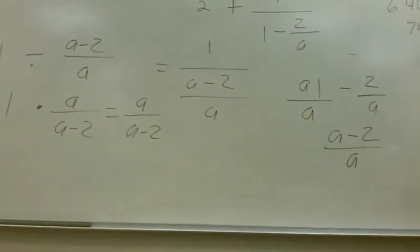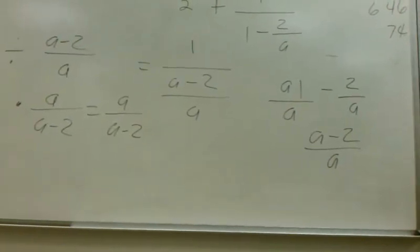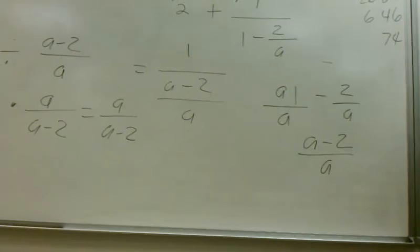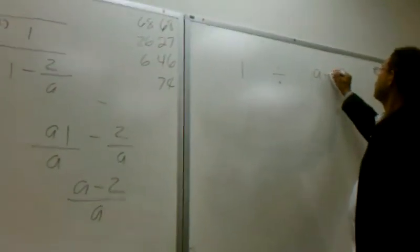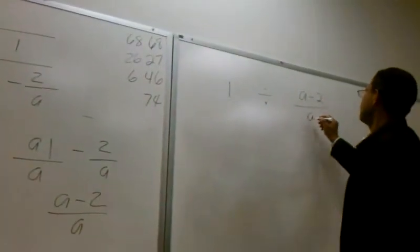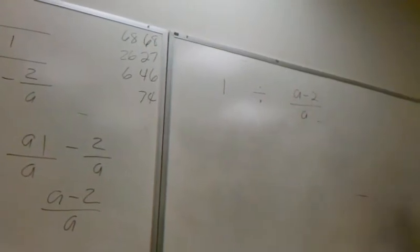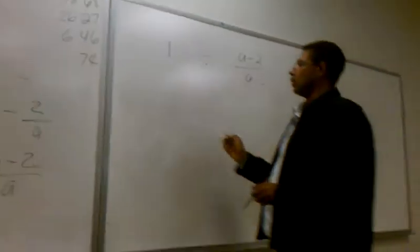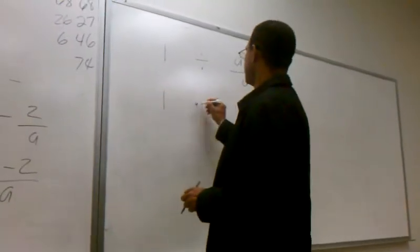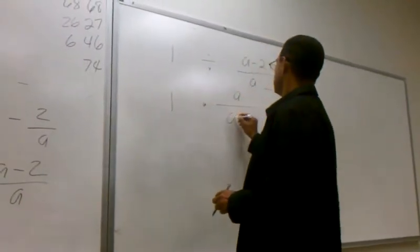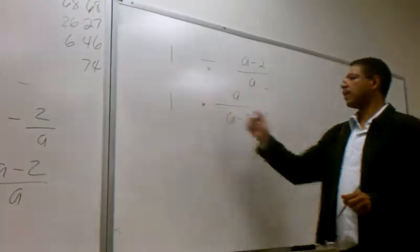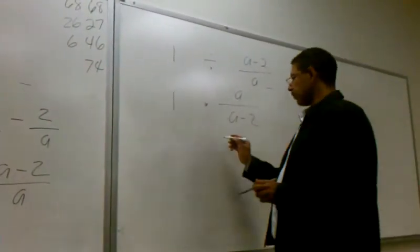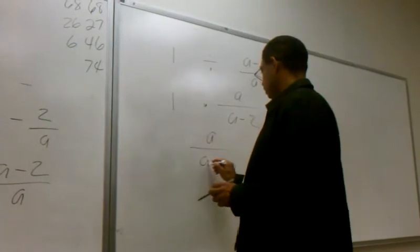Let's go over this again. We have 1, and we divide it by a minus 2 over a. How do I change it to a multiplication problem? You flip it — do the reciprocal. So we're going to take 1 times a over a minus 2. What is 1 times something? It's a over a minus 2.